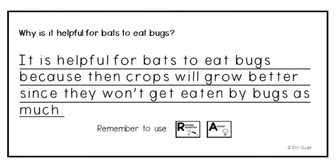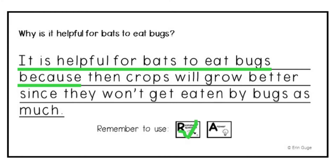And here is the question: Why is it helpful for bats to eat bugs? Let's read what is written here. It is helpful for bats to eat bugs because then crops will grow better since they won't get eaten by bugs as much. Do you see how it restated the question? Whisper which words restate the question. Why is it helpful for bats to eat bugs? Yes, these words: It is helpful for bats to eat bugs because.